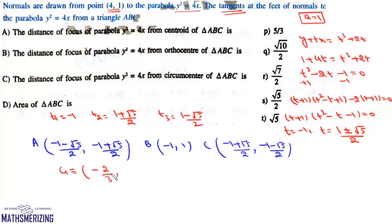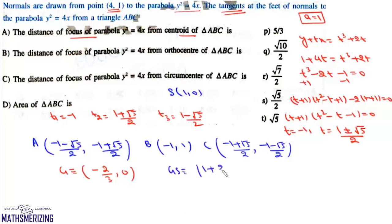Now we find the centroid of triangle ABC. The x-coordinate of the centroid is -2/3, and the y-coordinate: the √5/2 terms cancel, giving 0. So centroid is (-2/3, 0). For this parabola, the focus is at (1, 0). The distance of focus from centroid is |1 - (-2/3)| = 5/3. So the answer matches option A: 5/3.